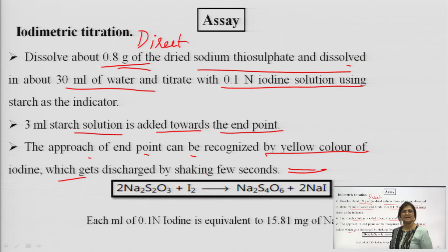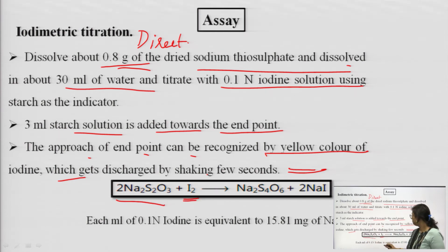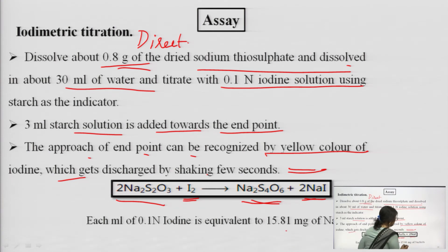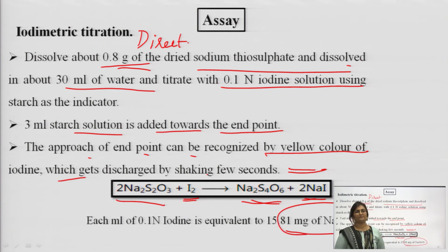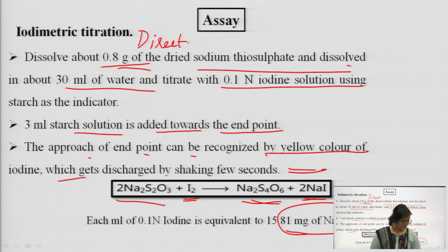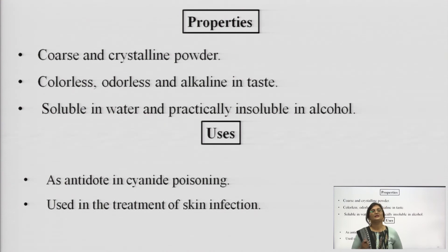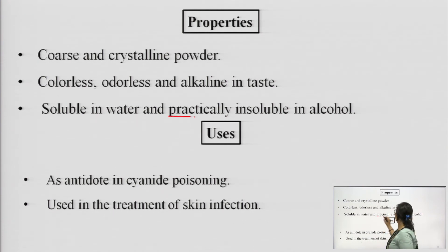The reaction occurring is: Na2S2O3 reacts with iodine (I2) to form Na2S4O6 plus 2NaI. Each 0.1 normal iodine is equivalent to 15.81 mg of sodium thiosulfate — this is the standardization value. Sodium thiosulfate is a coarse, crystalline, colourless, odourless powder, alkaline in taste. It is soluble in water and practically insoluble in alcohol.